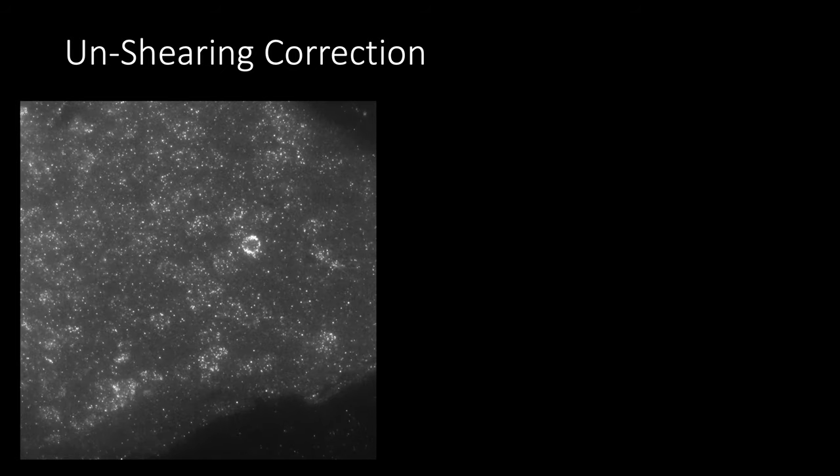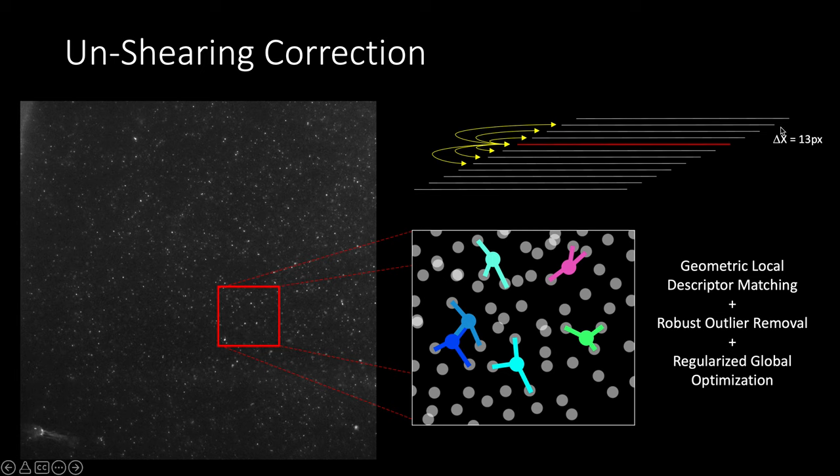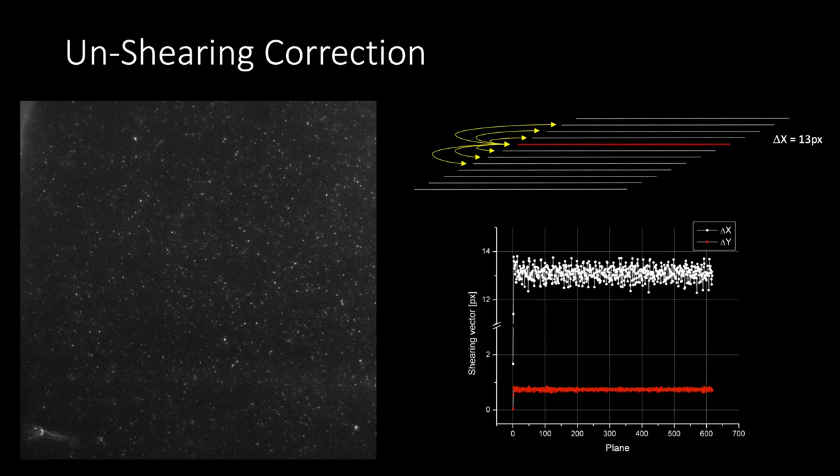Let's first talk about the unshearing. This is how a stack looks as you acquire it from the microscope. As you can see, it moves, so it's not the type of data you know and deal with. What you need to do is unshear the data, usually by the delta you know from your microscopy stage. In our case it's about 13 pixels per Z-plane, but as I said that is actually not that correct. How do we find the correct overlap and the correct shear? We do geometrically local descriptor matching, or SIFT, combined with robust outlier removal and regularized global optimization. We find corresponding points between overlapping slices, plus or minus three by default. It's ideal if you have dots but it works with any type of content. It's pretty robust also if some slices are black because you have this regularized global optimization.